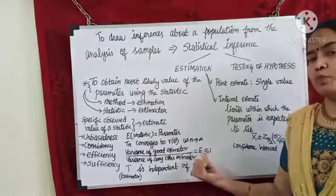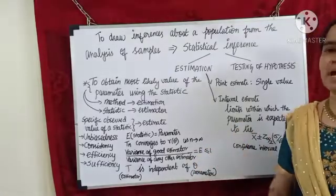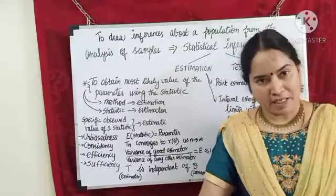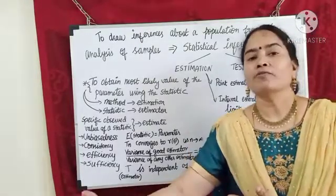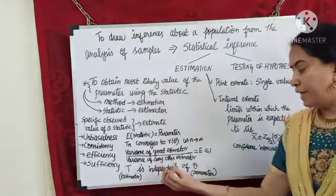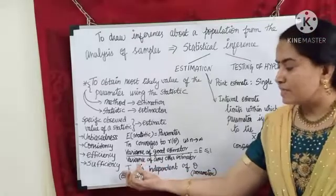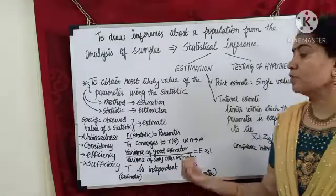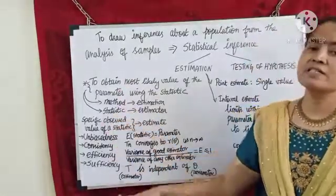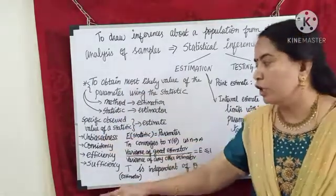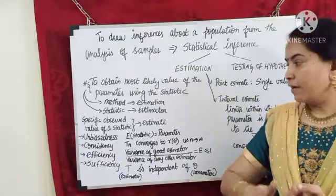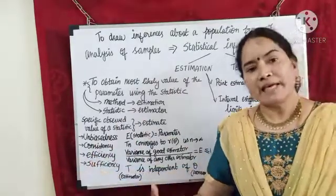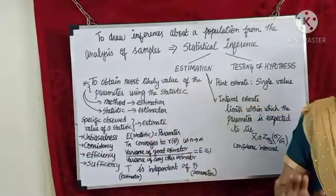Variance of the good estimator divided by variance of any other estimator should not exceed 1, so E should be below or equal to 1. Sufficiency tells us the statistic — the sample statistic which we call estimator — is independent of the population parameter. Then we say the estimator is sufficient. The estimator satisfying all four properties — unbiasedness, consistency, efficiency, and sufficiency — can be termed a good estimator.